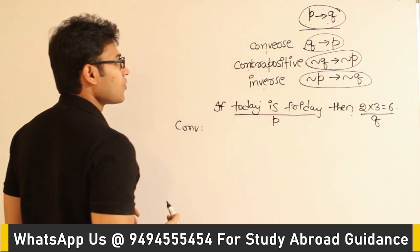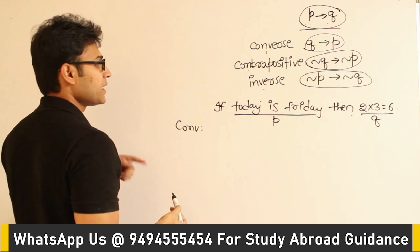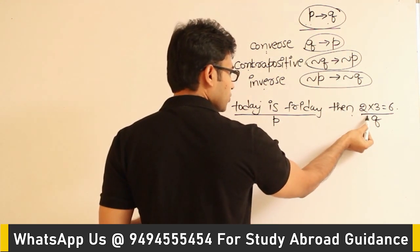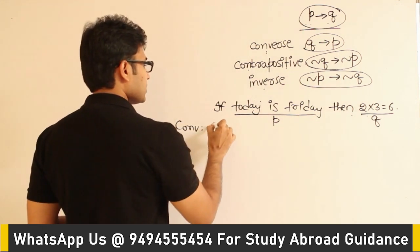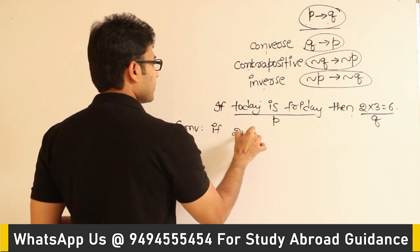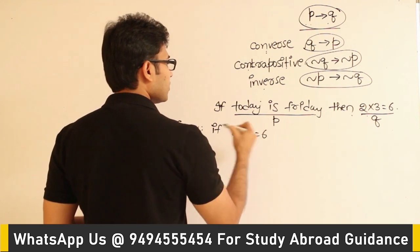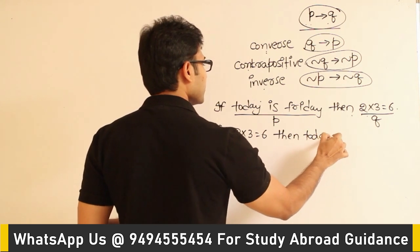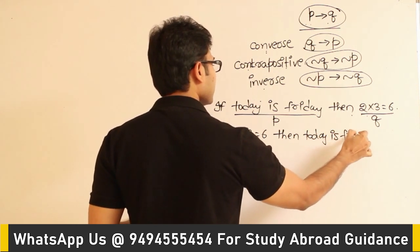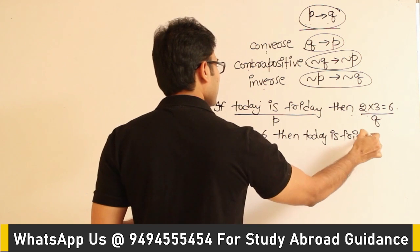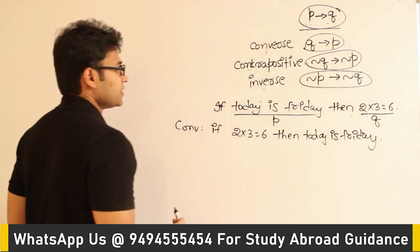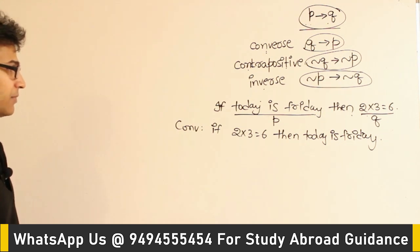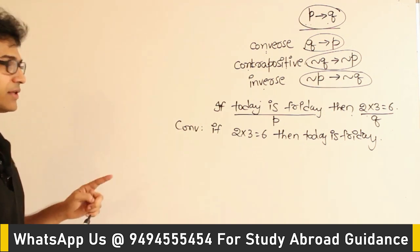Now, what about converse? Converse will be Q implies P. So you have to take Q and then P. It is: if 2 into 3 equals 6, then today is Friday. See how logical it is — what is the relationship between 2 into 3 equals 6 and today is Friday? But such statements are possible in this subject.